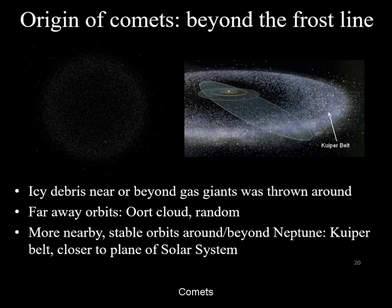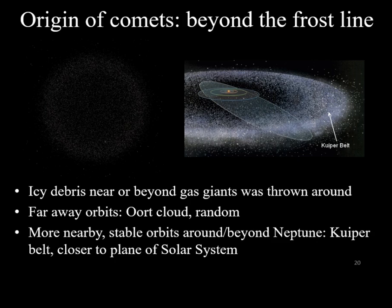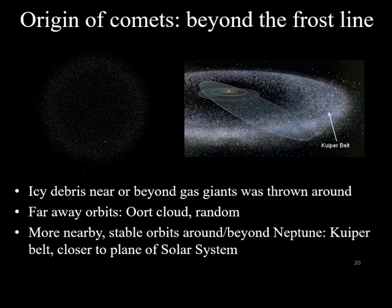Comets that have been thrown into very high orbits form a very large sphere of icy debris around the sun, known as the Oort Cloud.